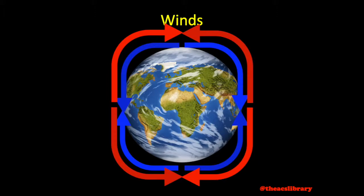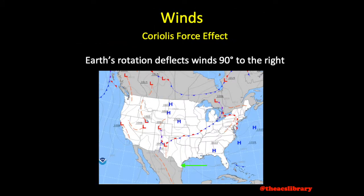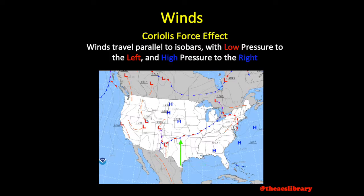Because of the rotation of the earth, an effect known as Coriolis force deflects winds in the northern hemisphere to the right and in the southern hemisphere to the left. Coriolis force increases as one travels towards the poles. If only PGF and Coriolis force existed, winds would travel parallel to isobars with the lower pressure to the left and high pressure to the right.